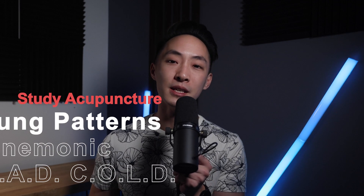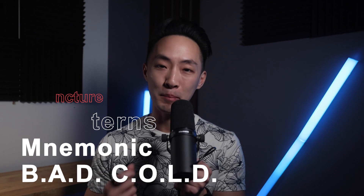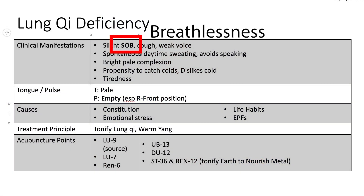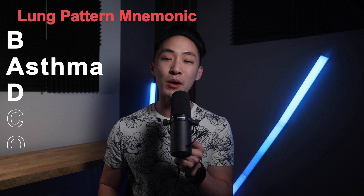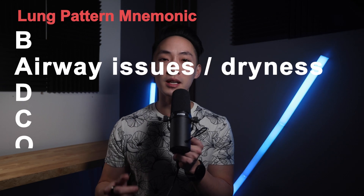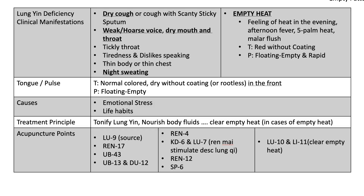Now with the lung patterns, the mnemonic is BAD COLD. B stands for breathlessness — this comes from our first empty pattern, lung chi deficiency. A in BAD COLD stands for asthma. When you look at the clinical manifestations of lung yin deficiency, there's dry cough, weak hoarse voice, dry mouth, and dry throat. It's hard to put all that into a quick mnemonic, and the only thing I could think of was asthma — but now I feel like the better choice for A would actually be airway issues or airway dryness.